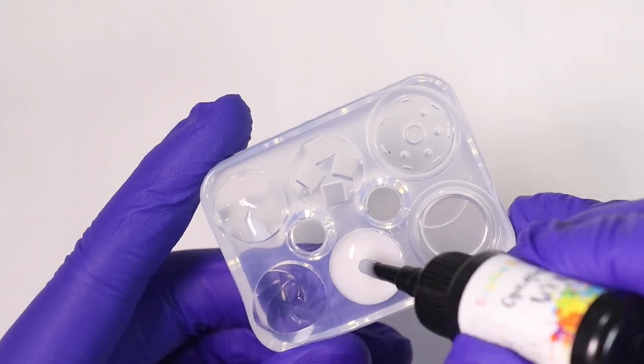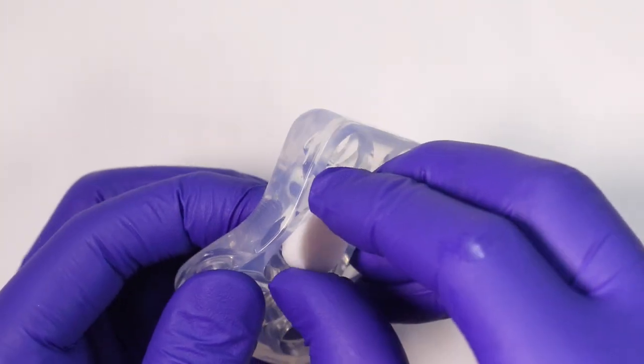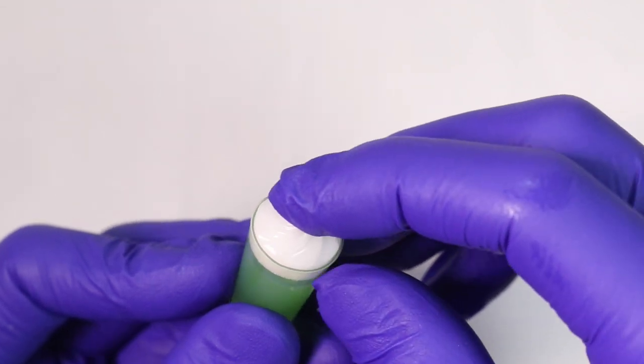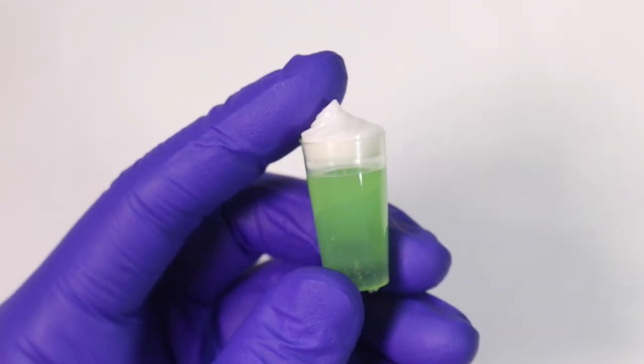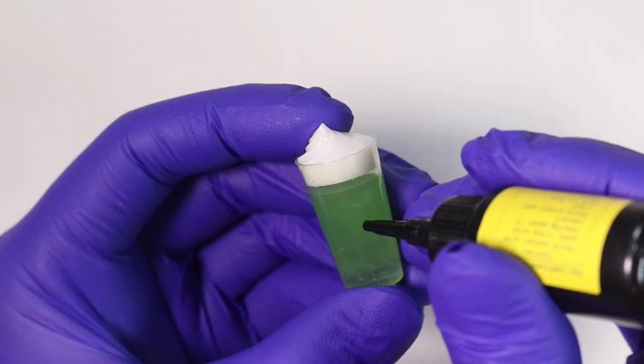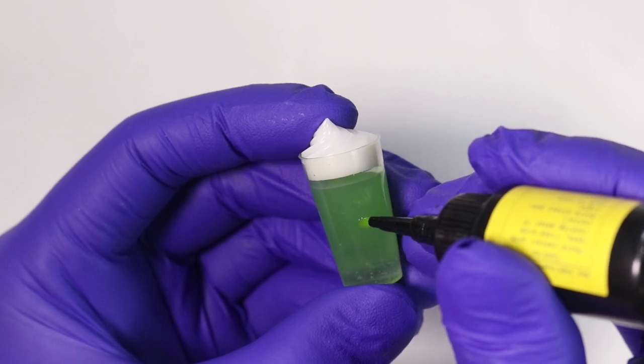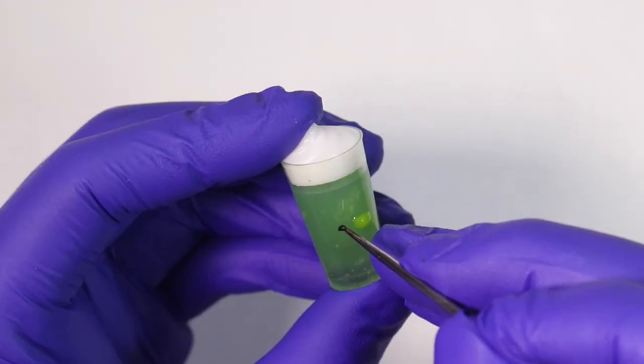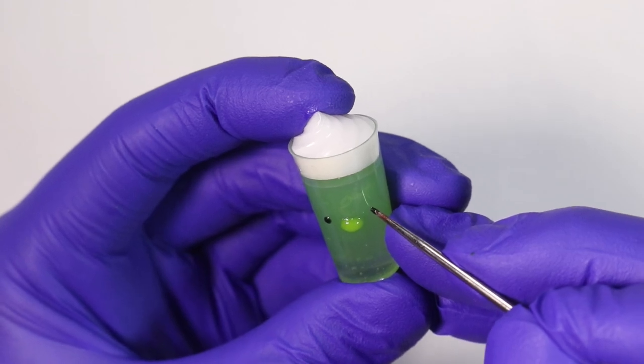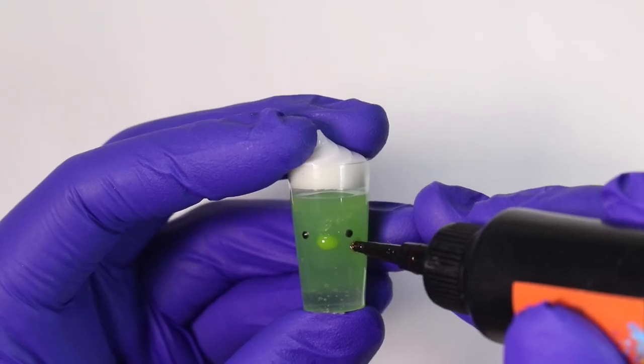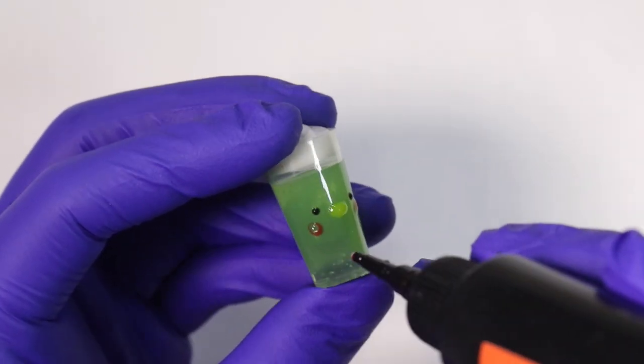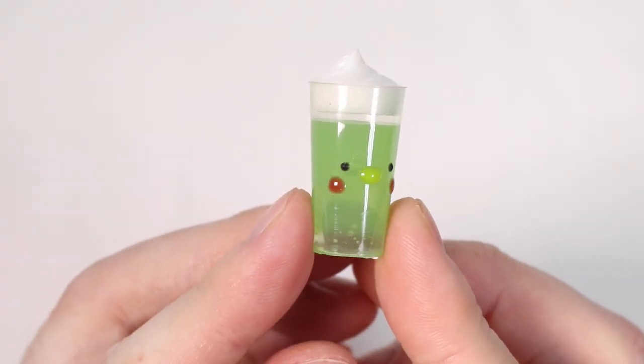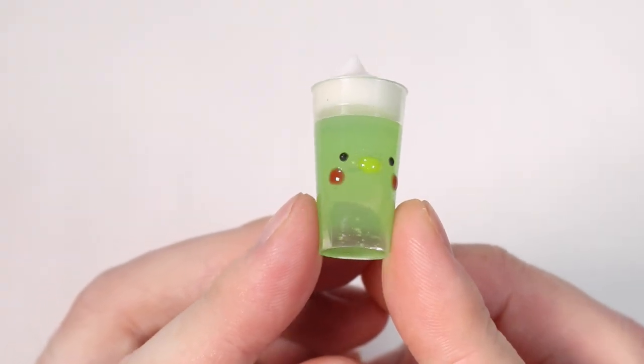And then we're going to pour some white resin into one of our lids and it just goes right inside. Then we're going to give it the same yellow nose, dot eyes, and blush and let that cure. And we have our green drink as well and it looks so good.